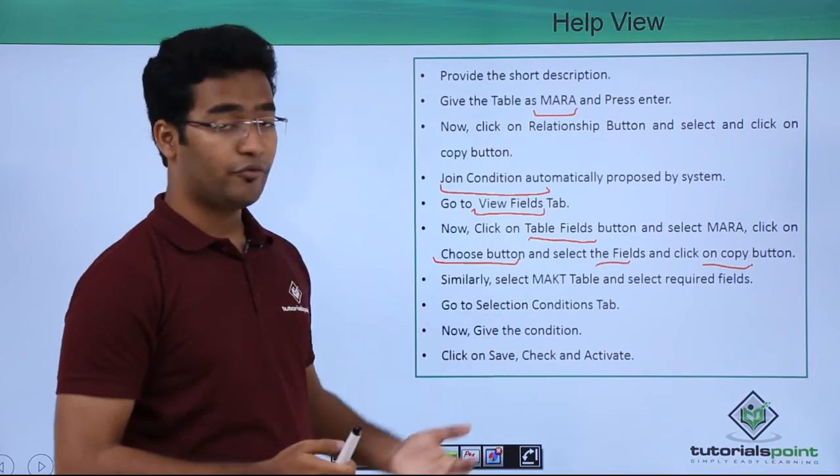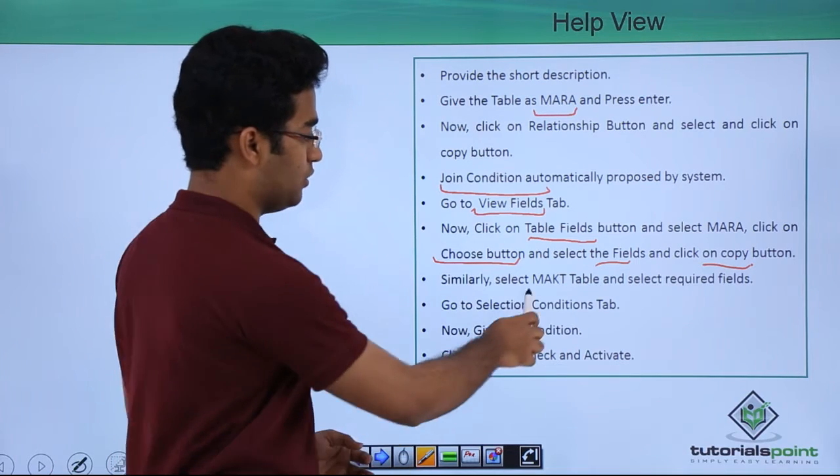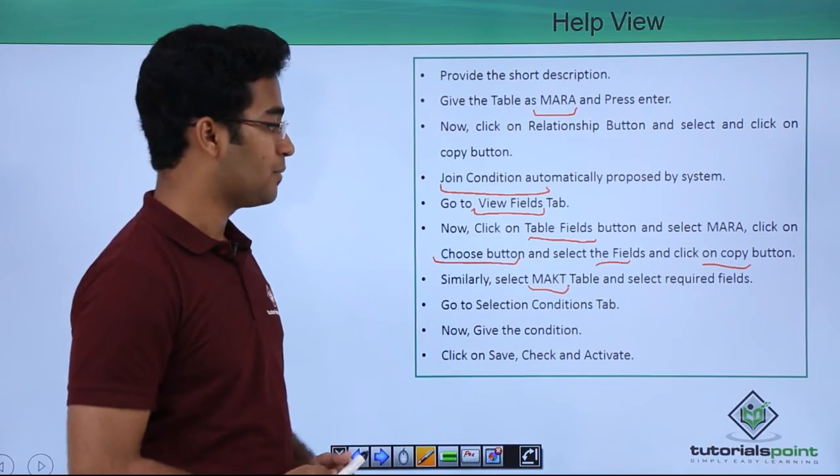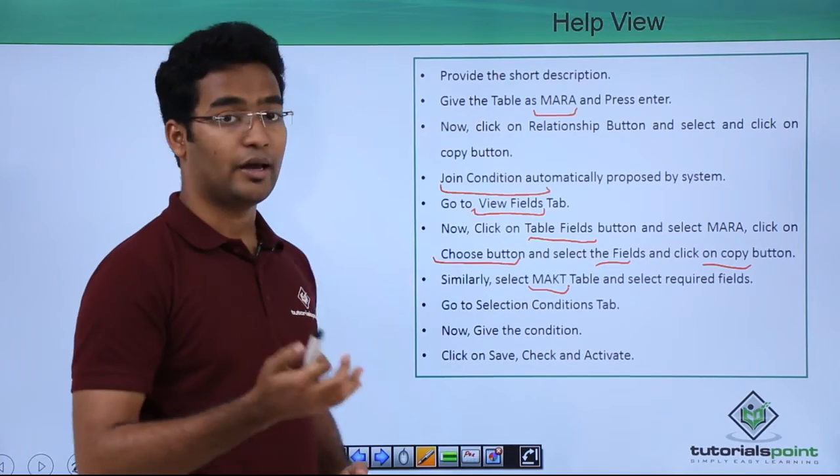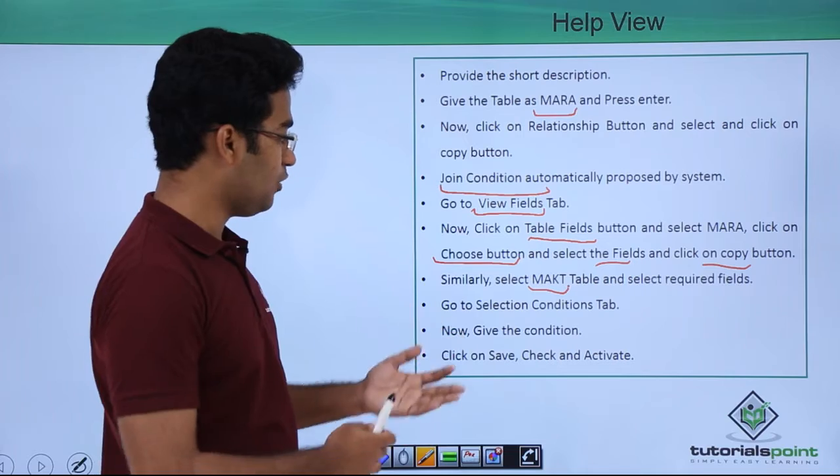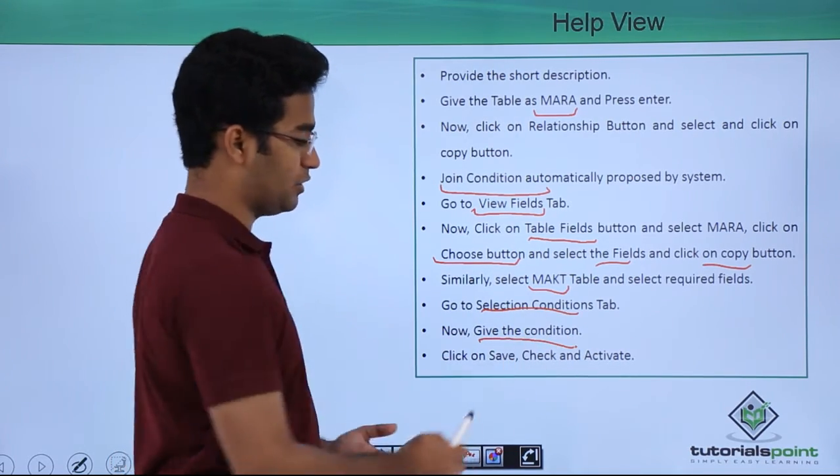Similarly we have to do it for MAKT table. In this case we are using another table that is MAKT. Then we have to select the required fields as per the business requirement. Then go to selection condition tab and give the particular condition.